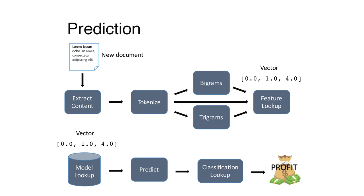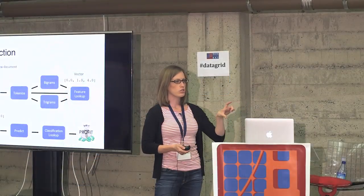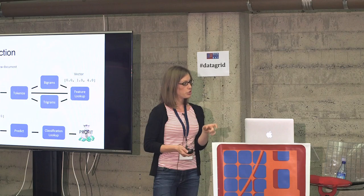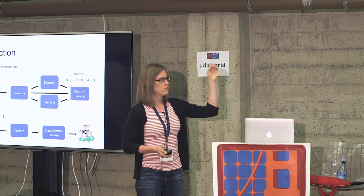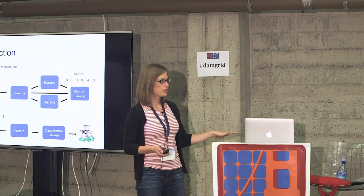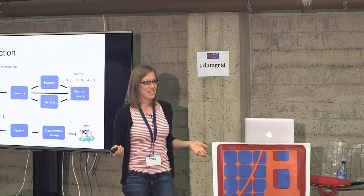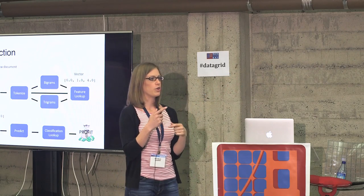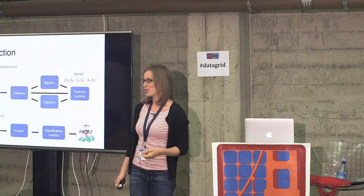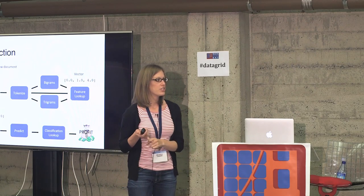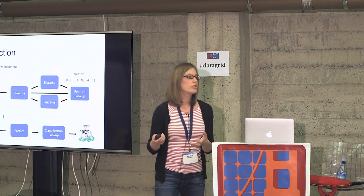We may use that model right away or put it into some sort of storage layer and recall it later. Once we have that model, we can make predictions on anything else in the domain — keeping it in the same domain as the original training text. When we get a new piece of text, we run it through the exact same featurization pipeline to get our feature vector, grab the model we built, and send it in to ask for a prediction. MLlib takes our feature vector as input and gives us a number — a prediction. We look up what that prediction is and send it back to the person who asked.